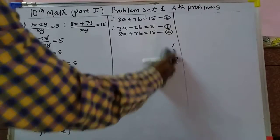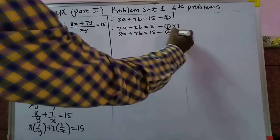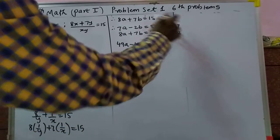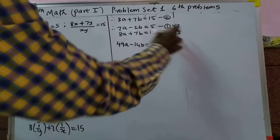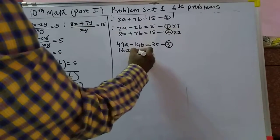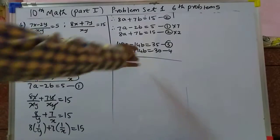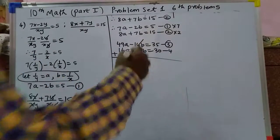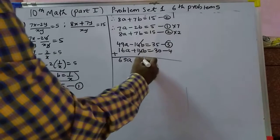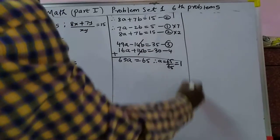Multiplying equation 1 by 7: 49a minus 14b equals 35, equation 3. Multiplying equation 2 by 2: 16a plus 14b equals 30, equation 4. Adding equations 3 and 4: 65a equals 65. Therefore a equals 65 upon 65 equals 1.